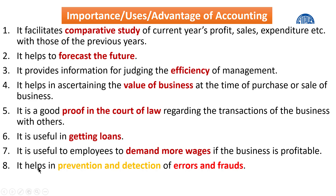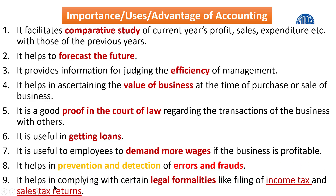The seventh advantage is that accounting information is useful for employees to demand higher wages. If employees find that the business is profitable, they may request salary increases or better benefits from management, since the profitability is partly due to their effort. If employees see no benefit, they may become demotivated, so compensation linked to profit is important.